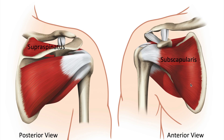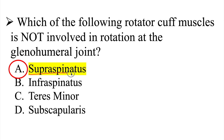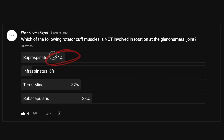The subscapularis is underneath the scapula and cannot really be accessed unless you dig into somebody's axilla or armpit. The subscapularis is responsible for medial rotation at the glenohumeral joint. The supraspinatus is responsible for initiation of abduction at the glenohumeral joint. So the correct answer is supraspinatus — it is the only muscle that does not involve rotation. Only 24% of you got this correct.